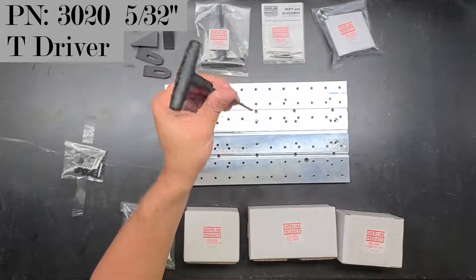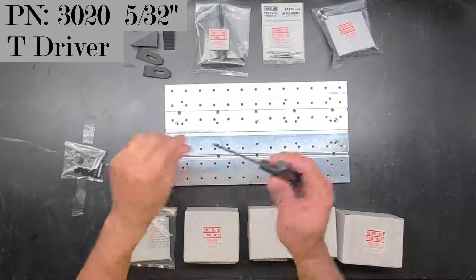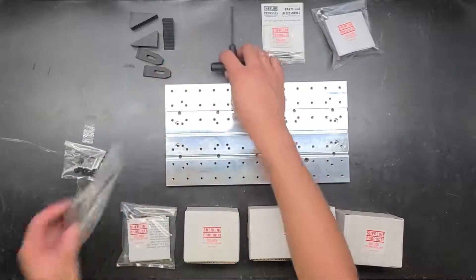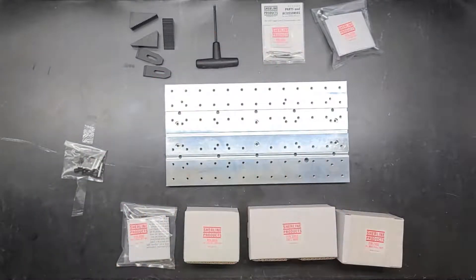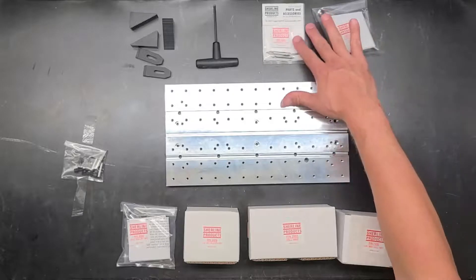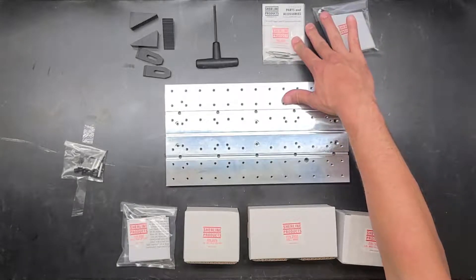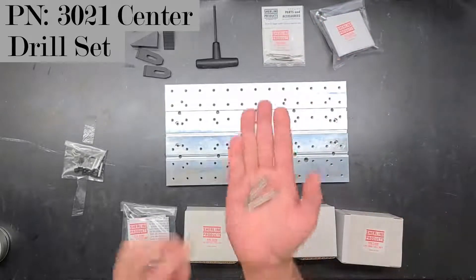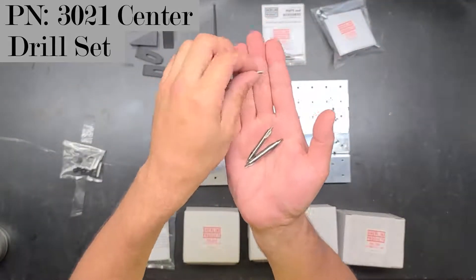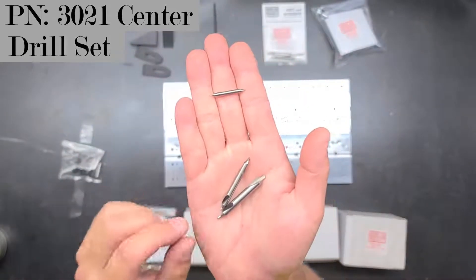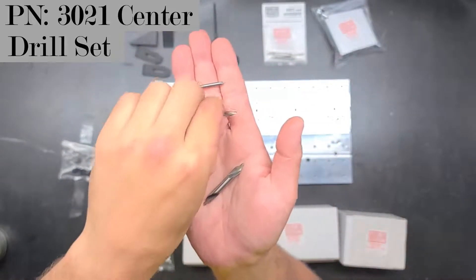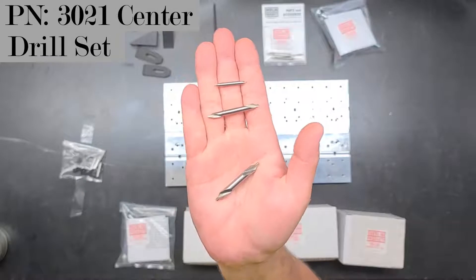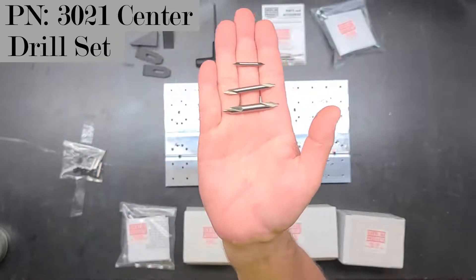I don't think I'm going to break out this new one because I've already got this one. I don't want to over clutter my workspace. It comes with another set of center drills, the part number 3021. The three center drills are going to be a zero, a number two, and a number three.